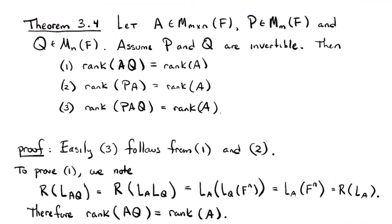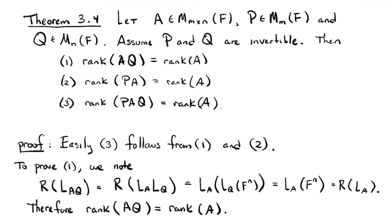With that in mind, let's look at Theorem 3.4. It involves three matrices: one arbitrary M by N matrix, and two invertible matrices — one square with M rows and columns, one square with N rows and columns. The theorem says that if you left or right multiply A by invertible matrices of appropriate size, you don't change the rank. The third statement — that you can multiply on both sides without changing rank — follows from the first two. So I really only need to prove statements one and two.